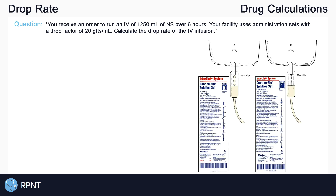First, it's good to know what the drop factor actually is. Drop factor is the number of drops that fall from an infusion set that add up to equal one milliliter. For example, if we have a drop factor of 10 drops per mL, that means every 10 drops that fall is equal to one milliliter of fluid. This is known as a macro drip because the drops are large. If we have a drop factor of 60 drops per mL, that means it takes 60 drops to equal one milliliter of fluid. This is known as a micro drip because the drops are much smaller.